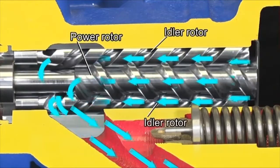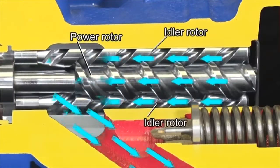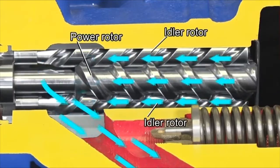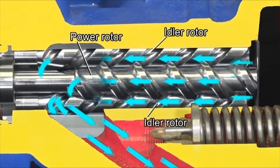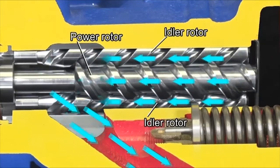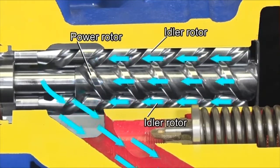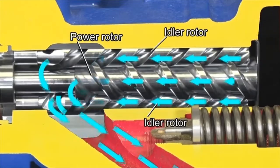When the power rotor is turned clockwise as seen from the drive side, the idler rotors turn in the opposite direction. This creates a sealed space per screw lead. It moves toward the discharge side along the screw shaft.